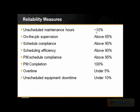Unscheduled maintenance hours should be 10% or less — we should have about 90% of our work planned and scheduled. On-the-job supervision should be above 65%, meaning at least 65% of our jobs should have a supervisor visit them while being done or at the end of the job to check the condition it was left in. Too many times supervisors are overloaded with administrative work and don't have time for this. It's not about looking over people's shoulders — it's about checking whether we meet expectations and identifying training needs.